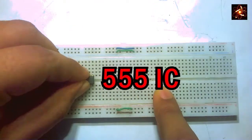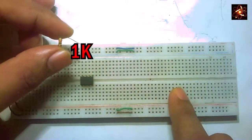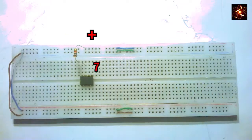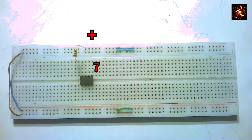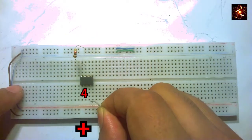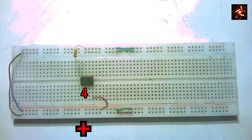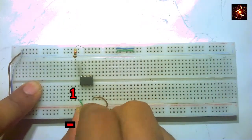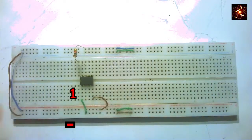First connect the TPO5 timer IC in the middle part of the breadboard. In pin 7 we add a 1k ohm resistor and the opposite side of the resistor is connecting in the positive rail. Pin number 4 is connecting in the positive rail and pin number 1 is connecting in the negative rail.